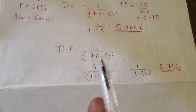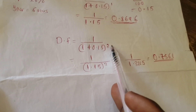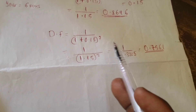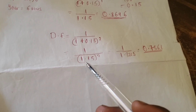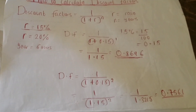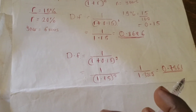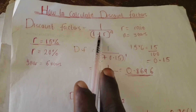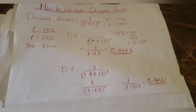For the third year at 15%, you just substitute n as 3. You take the cube of 1.15, then divide 1 by that number to get the discount factor. If you look at the solution we did earlier, you'll find it's the same answer. That is how to calculate the discount factor using the formula: 1 over (1 + r) raised to the power of n.